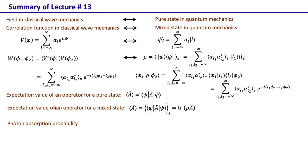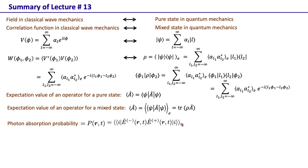In classical mechanics we have the concept of intensity, but in quantum mechanics the analogous concept is the photon absorption probability. Instead of asking what is the intensity, we ask: what is the probability of detecting a photon at location r at time t? This is given by the expectation value of E⁻ E⁺, where E⁻ and E⁺ are the negative and positive frequency parts of the field. For a mixed field, this is written as the trace of ρ times this operator.